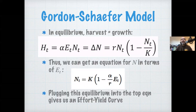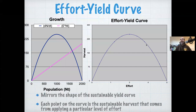More specifically, we can plug this equilibrium back into the harvest equation to get what's called an effort yield curve. Substituting N in, we get a function of the amount we can harvest sustainably as a function of effort. Plugging this in gives us an alpha·E·K term and an alpha·E·K minus alpha·R·E term — meaning we end up with an E term and an E-squared term, making the effort yield curve a parabola.